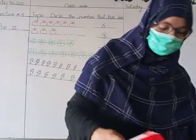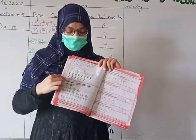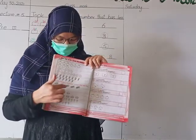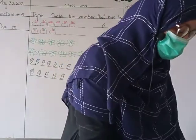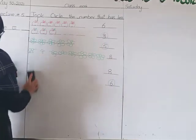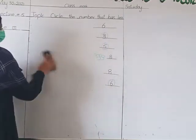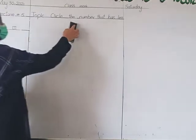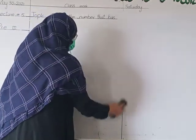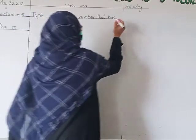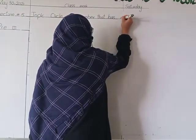Same like this topic. The next topic is: count and write, circle the number that has more. Circle the number that has more. This is the same as the above topic. The topic is circle the number that has more — you have to circle the number that has more.